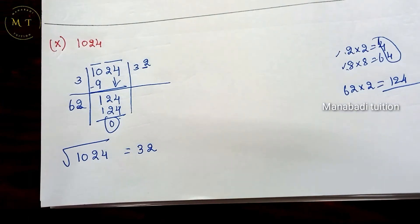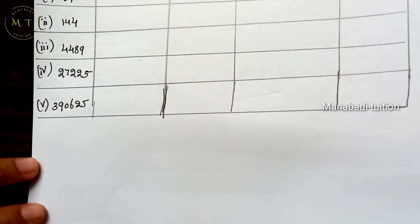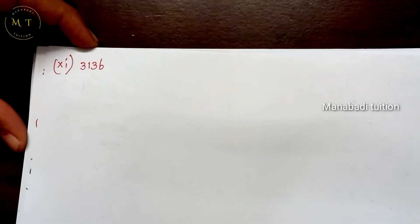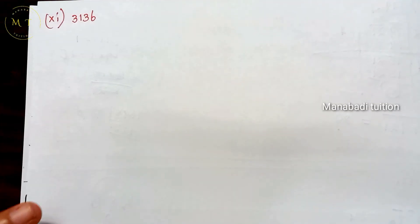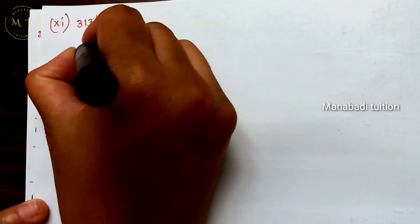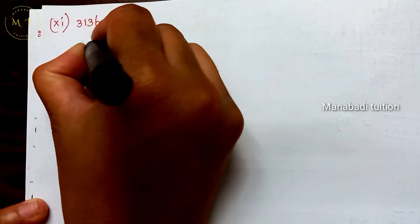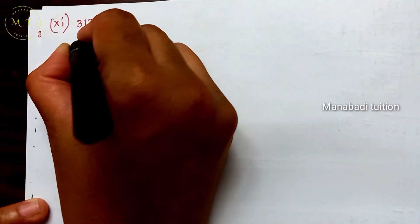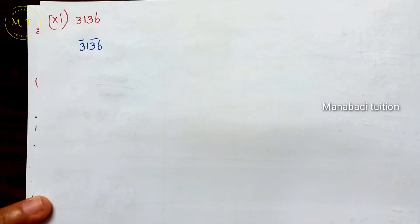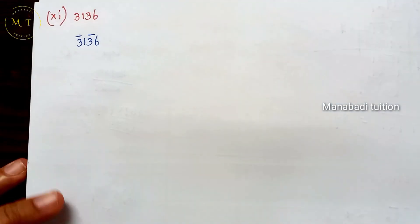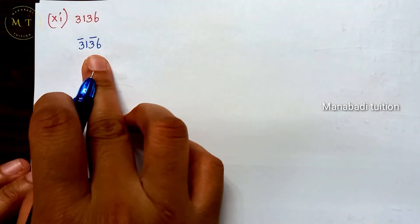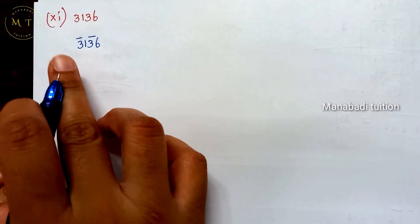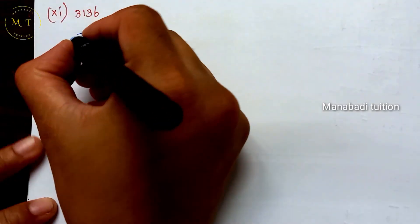So that's it. Next, 11th problem: 3136. So 3136 — 2 numbers make 1 pair. 36 is 1 pair, 31 is 1 pair. Now, you multiply the numbers — the same numbers. And 31 is the nearest number.